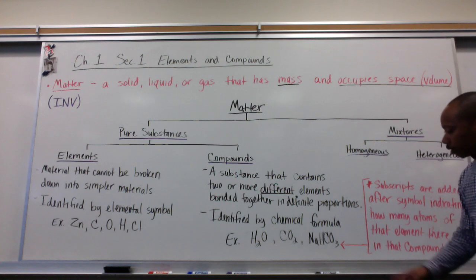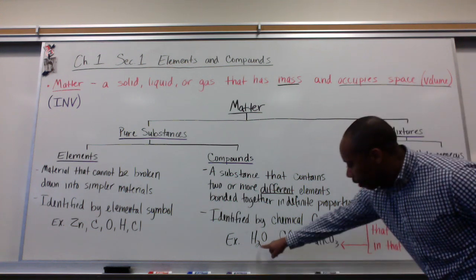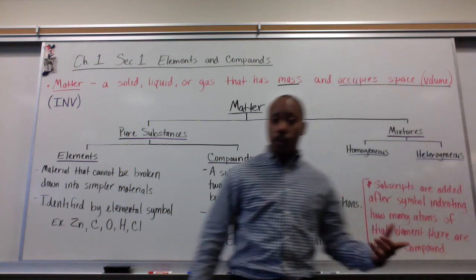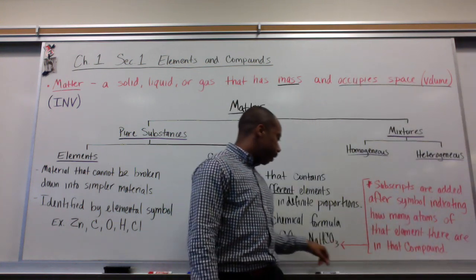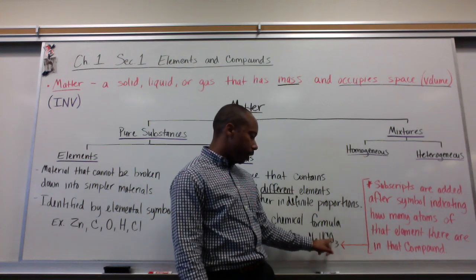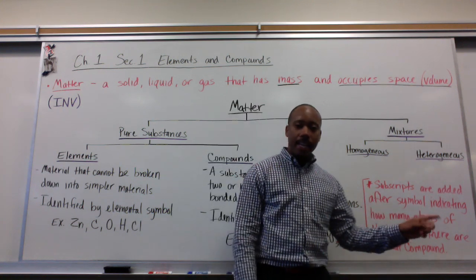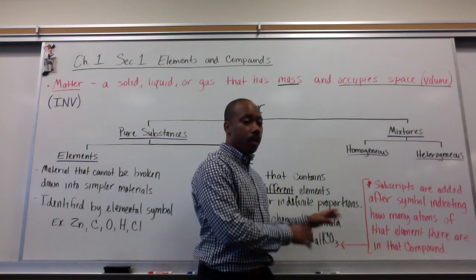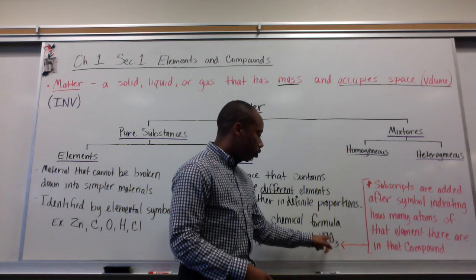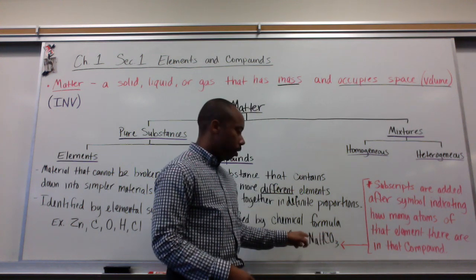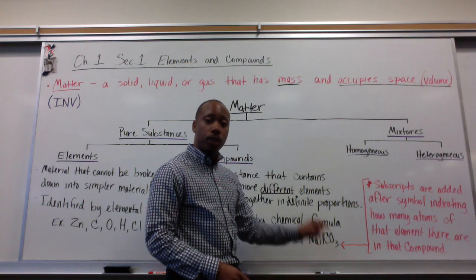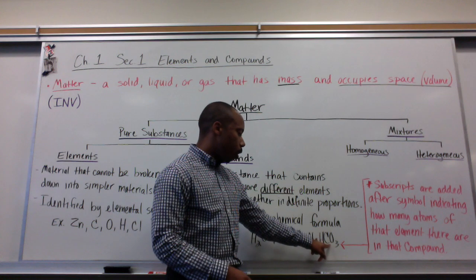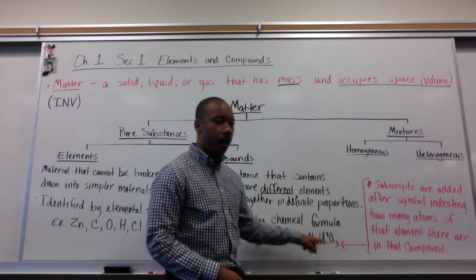Now, we notice these little numbers here in the chemical formula. These are called subscripts. These subscripts are added to the chemical formulas or are added to the symbols indicating how many atoms there are of that element in this compound. So, there are three oxygen atoms in this compound. If there is no subscript, it's understood to just be one. So, I have one sodium, one hydrogen, one carbon, three oxygens in this entire compound.